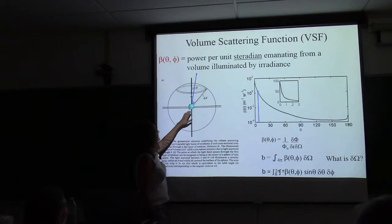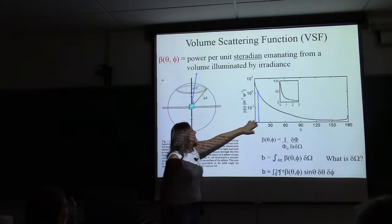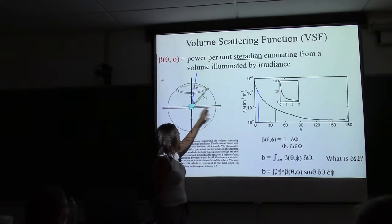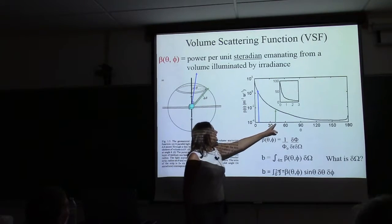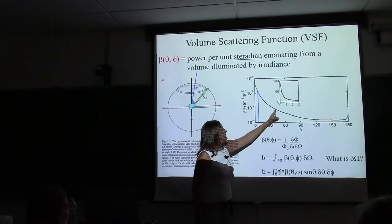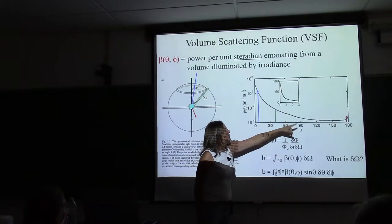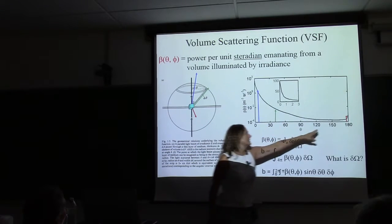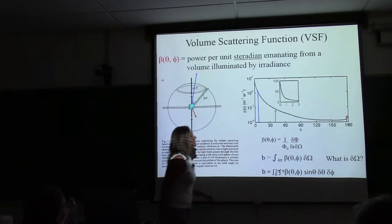A small angle would show up near zero on the volume scattering function; scattering at a larger angle would appear further along the curve; and scattering in the back direction would be at that far end of the curve.